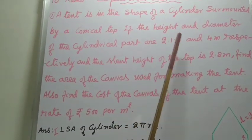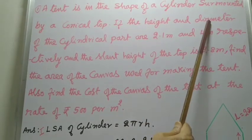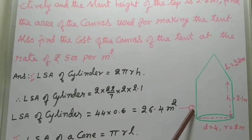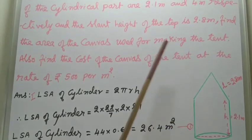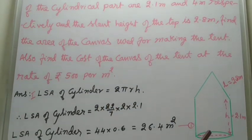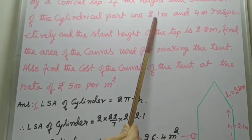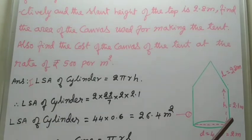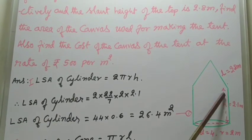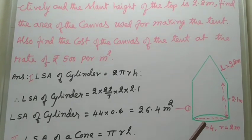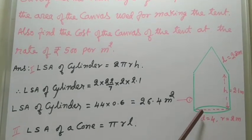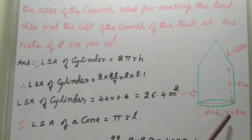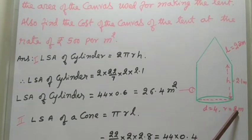So, if the height and diameter of the cylindrical part, the height of the cylindrical part is also given, they are 2.1m and 4m respectively. So, this height is equal to 2.1m. And, dear students, remember, not the radius, the diameter is given. D equal to 4m. So, convert it into radius R equal to 2m.